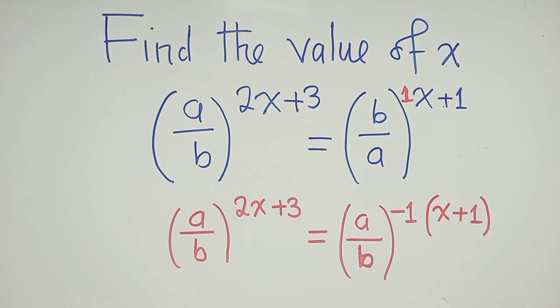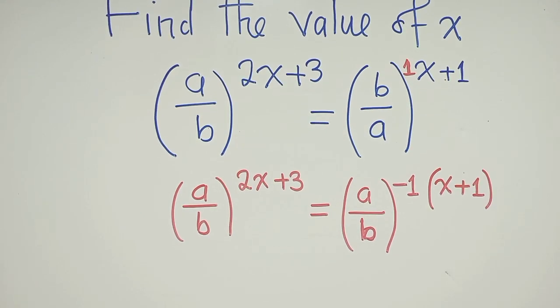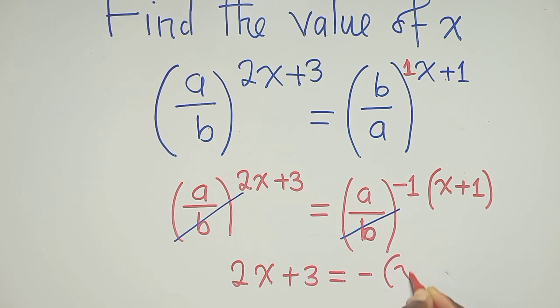So now from this stage, of course, we are going to say the bases are equal to each other. So forget about the bases. We have similar bases. So we can now say 2x plus 3 is equal to negative x plus 1.